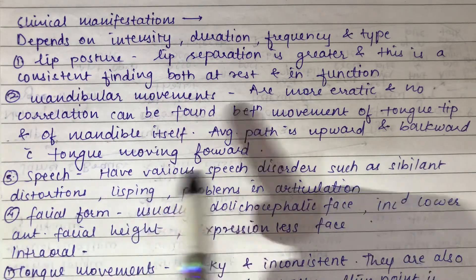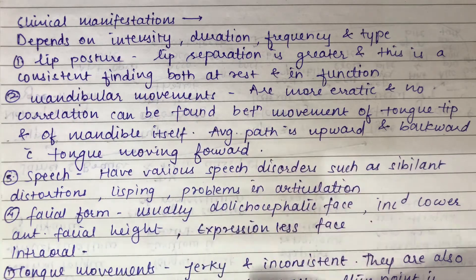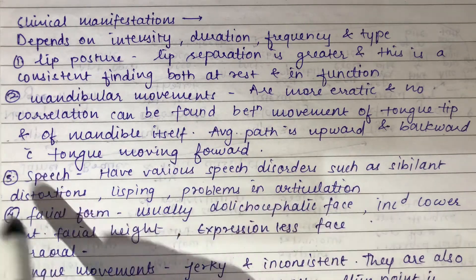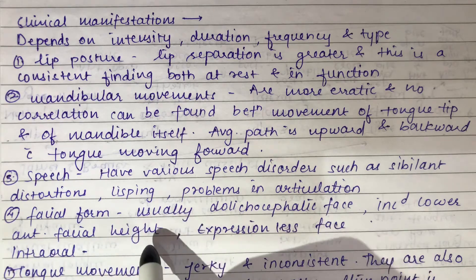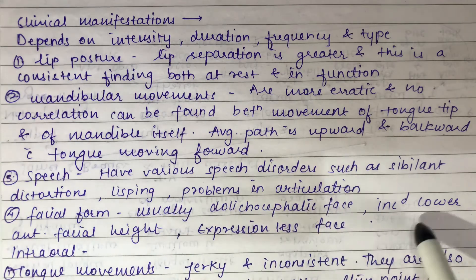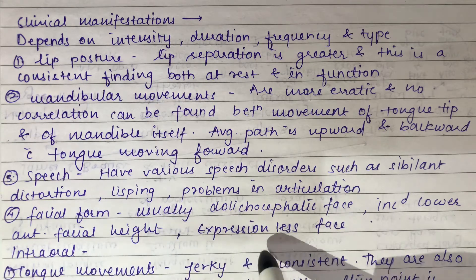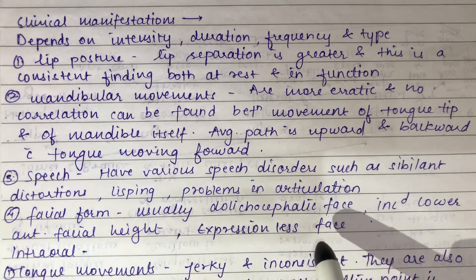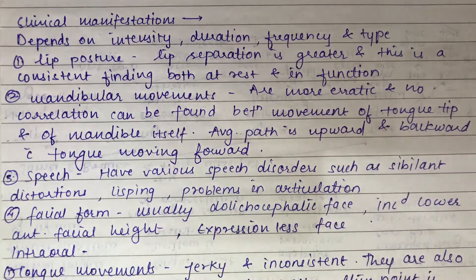Speech is affected: patients with tongue thrust have various speech disorders such as sibilant distortion, lisping, and problems in articulation. Regarding facial form, it is usually dolichocephalic with increased lower anterior facial height, and the patient looks expressionless. These are the extraoral features.